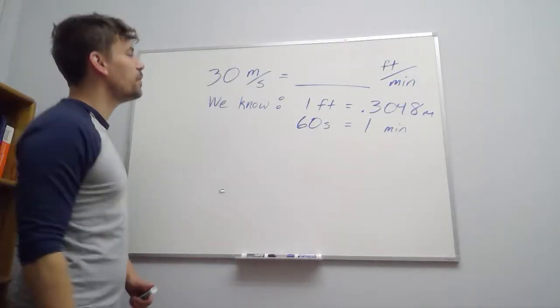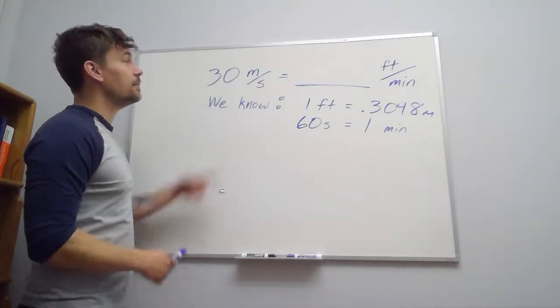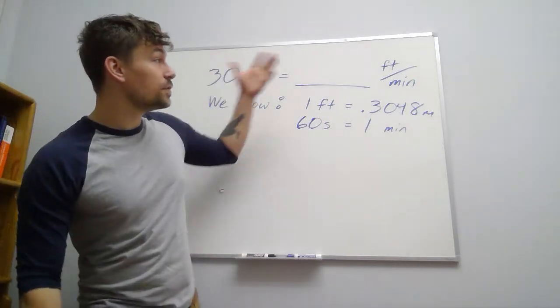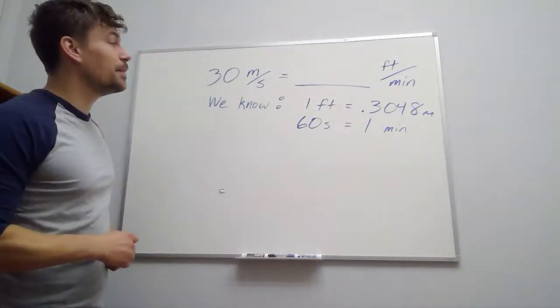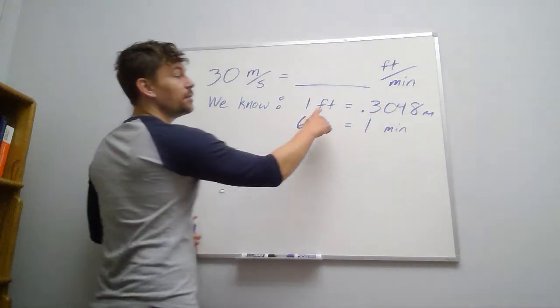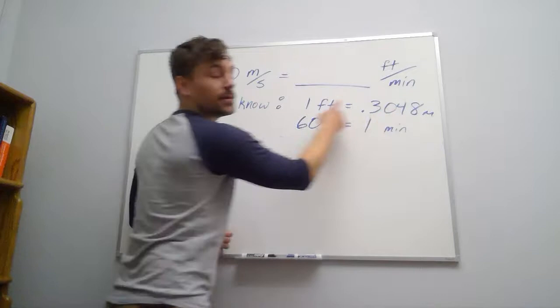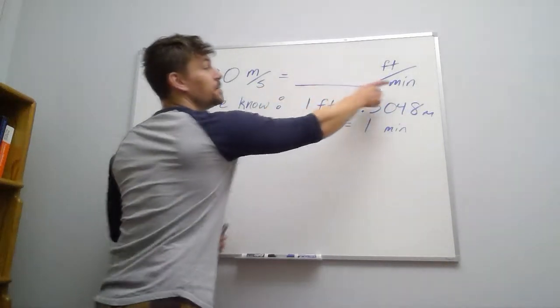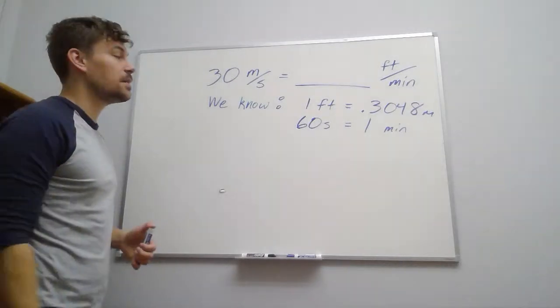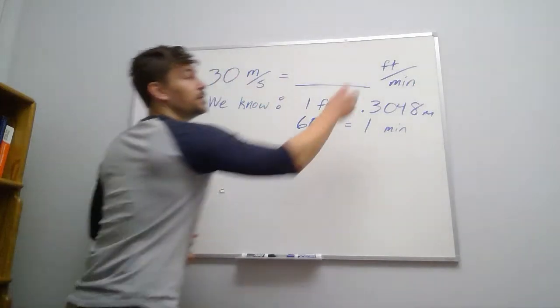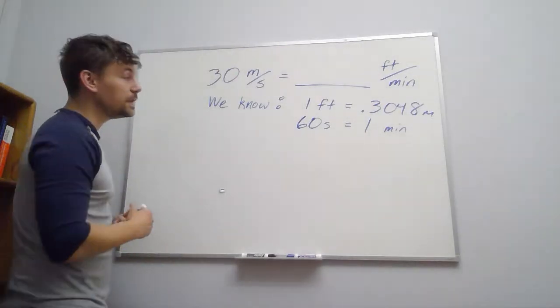Suppose we wanted to convert meters per second, in this case 30 meters per second, into units of feet per minute. So from our conversion chart, we should have a relationship between those lengths in feet and in meters, and then our times in seconds and minutes. So using both of those, we're going to convert from meters per second to feet per minute.